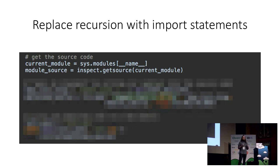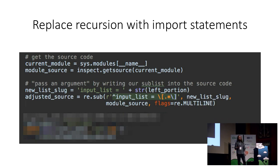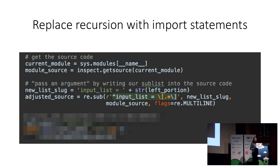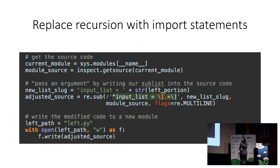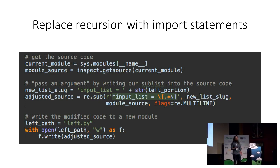There's one small problem: we don't want our child to do exactly the same thing we did, because we only want it to operate on half of the list. In other words, we need to emulate passing an argument into the function we're emulating. To do that, we just have to remember that source code is simply text — meaning we can manipulate it using Python's full suite of string manipulation tools. Here we use a regular expression to find a specific line in our source code where the list to operate on is defined, and we replace the entire line, giving us the exact source code for our child.